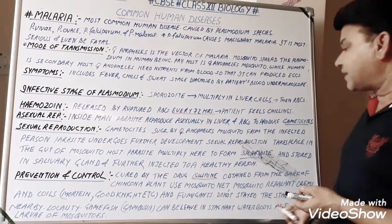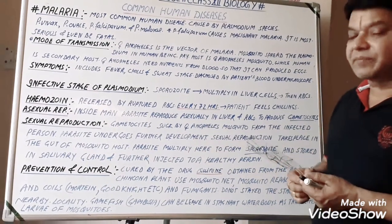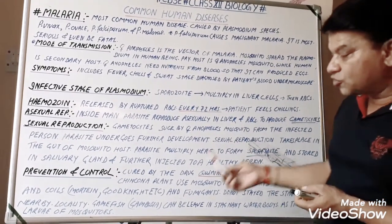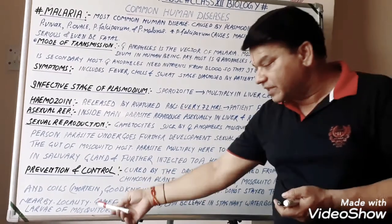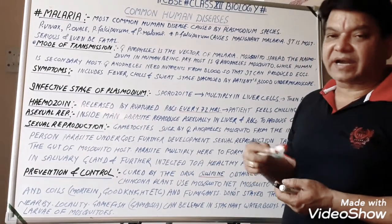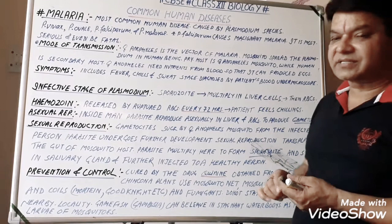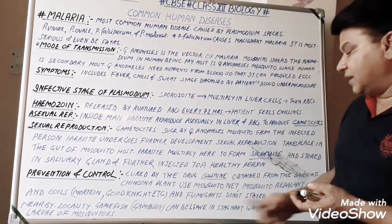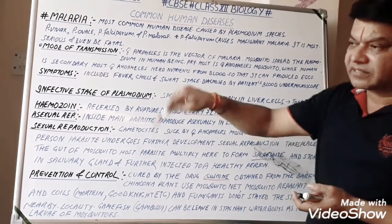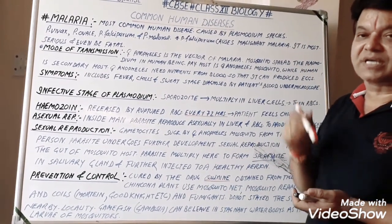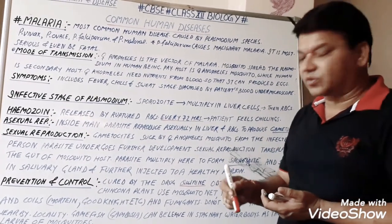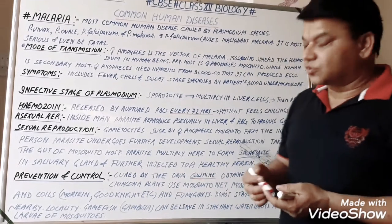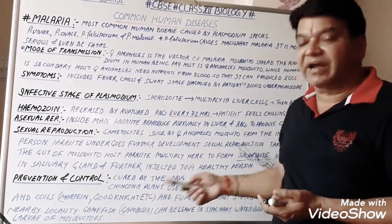Do not allow stagnant water to accumulate near the locality, as mosquito larvae develop in stagnant water and eventually become adults. Gambusia fish, also called game fish, can be introduced into stagnant water bodies because they destroy mosquito larvae — these are small fish that eat the larvae. By applying these methods, we can prevent and control malaria.